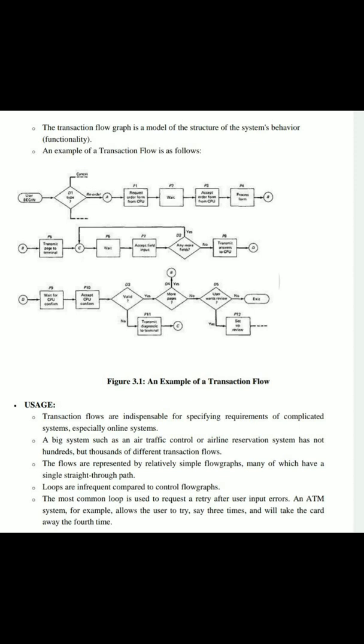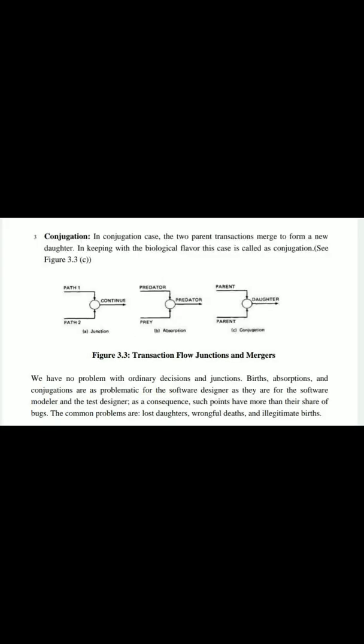Many transaction flow graphs have a single straight-through path. Loops are infrequent compared to control flow graphs. The most common loop is used to request a retry after user input errors — for example, an ATM system allows the user to try three times for incorrect input before rejecting the card.